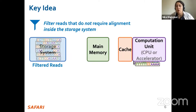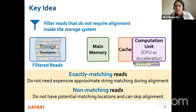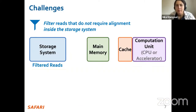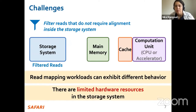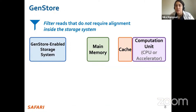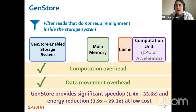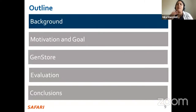Examples of reads that do not require that costly alignment step include exactly matching reads — reads that match exactly to the reference genome and do not need approximate string matching — and non-matching reads that have no potential matching locations in the reference genome and can skip the alignment step. However, filtering reads in a modern SSD can be challenging due to different behavior across read mapping workloads and limited hardware resources in the SSD. By addressing these challenges we propose GenStore, the first in-storage processing system designed for genome sequence analysis, to reduce both computation and data movement overhead.